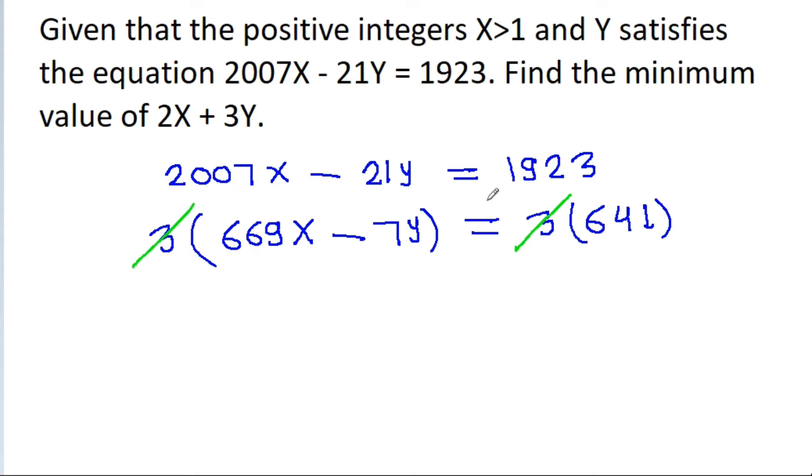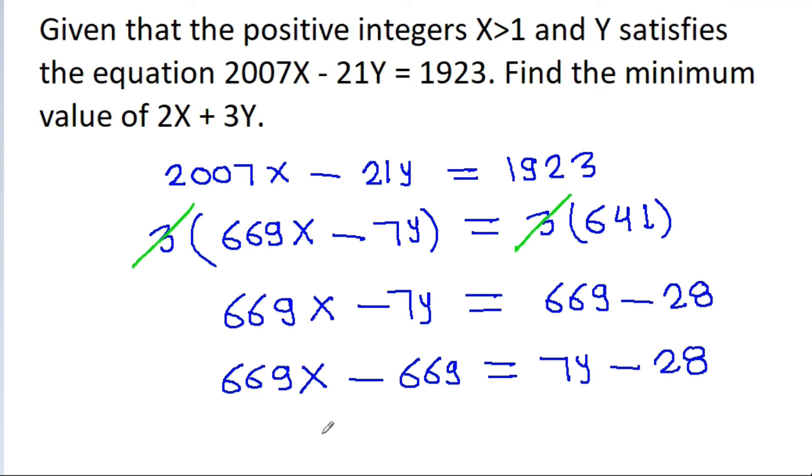And 3 will get cancelled and we get 669x minus 7y is equal to, and 641 is 669 minus 28. And now we can get 669x minus 669 is equal to 7y minus 28, and if we take 669 common then we get x minus 1 that is equal to, and here if we take 7 common then we get y minus 4.